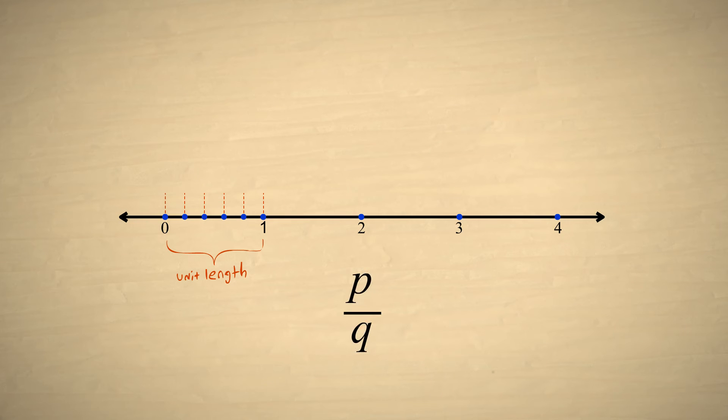So in any fraction, the denominator divides the unit length into equal parts, and the numerator specifies the number of those subdivisions in the fraction.